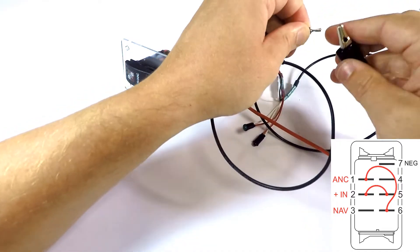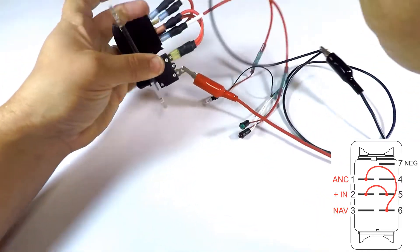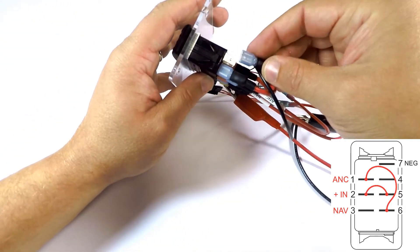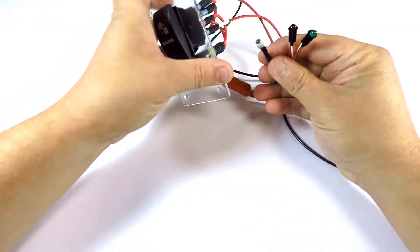This is going to terminal 7 on the nav anchor switch. That's the top right terminal looking at the back of the switch—terminal 7, there we go. And that's pretty much it.